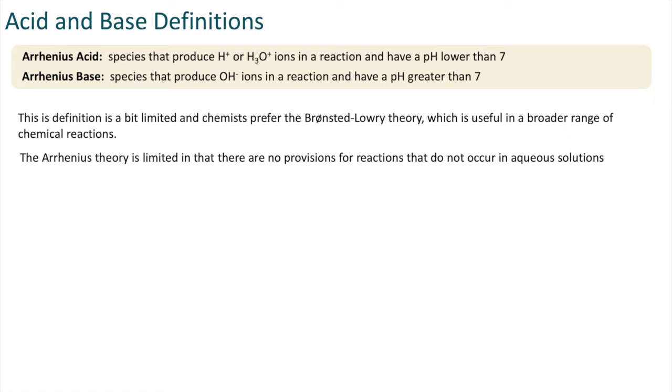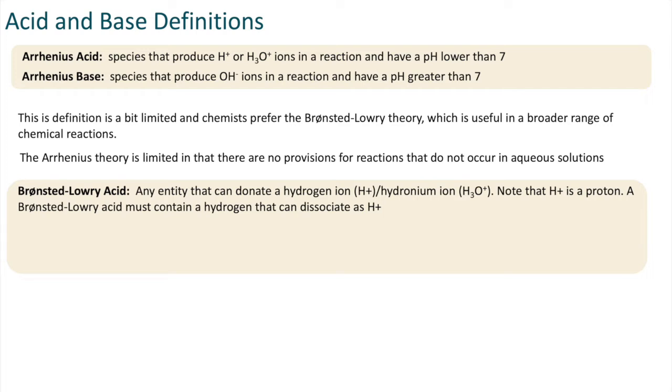A Bronsted-Lowry acid is any entity that can donate a hydrogen ion or a hydronium ion. Note that the hydrogen ion is a proton.